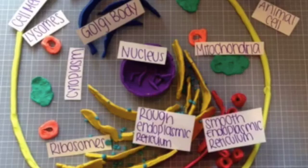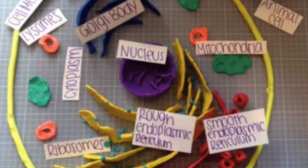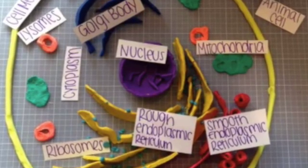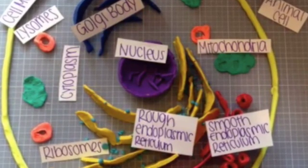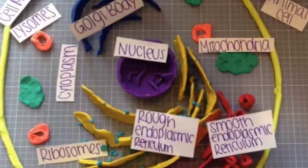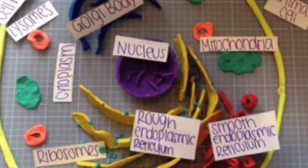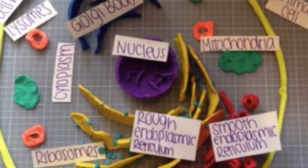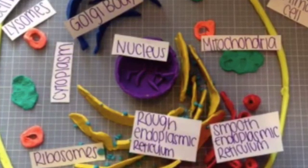In conclusion, the whole cell system would fail if the endoplasmic reticulum weren't there. This would happen because the endoplasmic reticulum sends proteins to other organelles, which give them the energy needed to function.